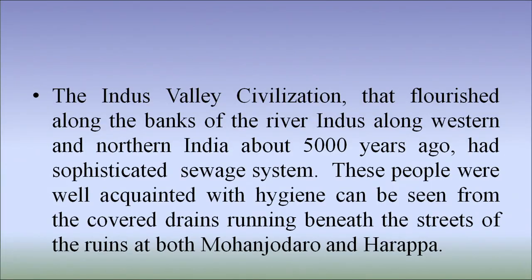The Indus Valley civilization that flourished along the banks of the river Indus along western and northern India, above 5000 years ago, had a sophisticated sewage system. These people were well acquainted with hygiene, which can be seen from the covered drains running beneath the streets of the ruins of both Mohenjo-daro and Harappa.